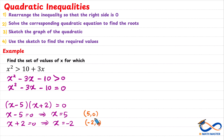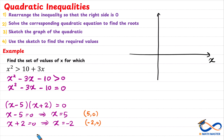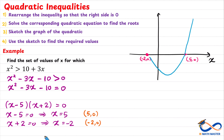So now we will sketch the graph. First, we plot the two roots on the x-axis: negative 2, 0 and 5, 0. Here the coefficient of x squared is positive, which means the graph will open upward like this.